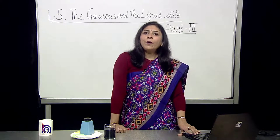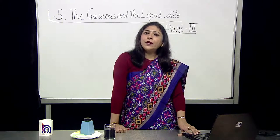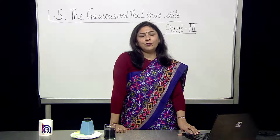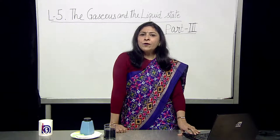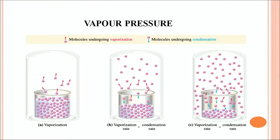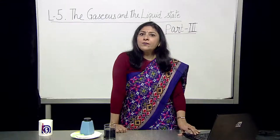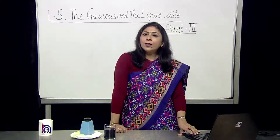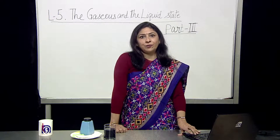In the beginning, the rate of evaporation is greater than the rate of condensation. In the open vessel, evaporation is seen; in the closed vessel, vaporization is initially more than condensation. Then slowly, vaporization becomes equivalent to condensation. This is how the vapors apply pressure — this is the vapor pressure.